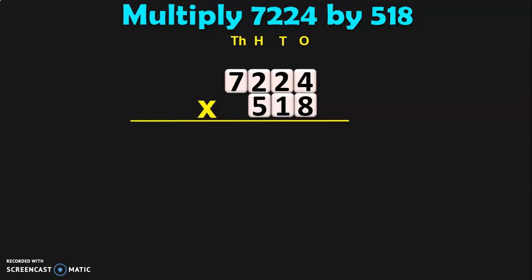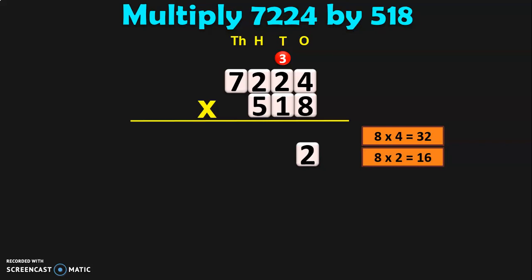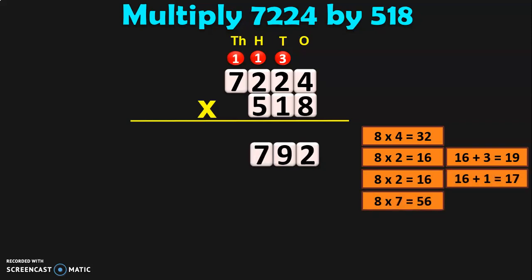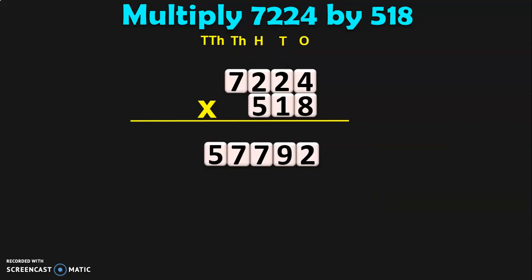Multiply 7,224 by 518. Write the 4-digit number under its respective place values and multiply it by 518. Begin the multiplication from the 1s place. 8 fours are 32 — 2, carry over 3. 8 twos are 16, plus 3 is 19 — 9, carry over 1. 8 twos are 16, plus 1 is 17 — 7, carry over 1. 8 sevens are 56, plus 1 is 57. So 7 in the 1000s place and 5 will move to the 10,000s place.